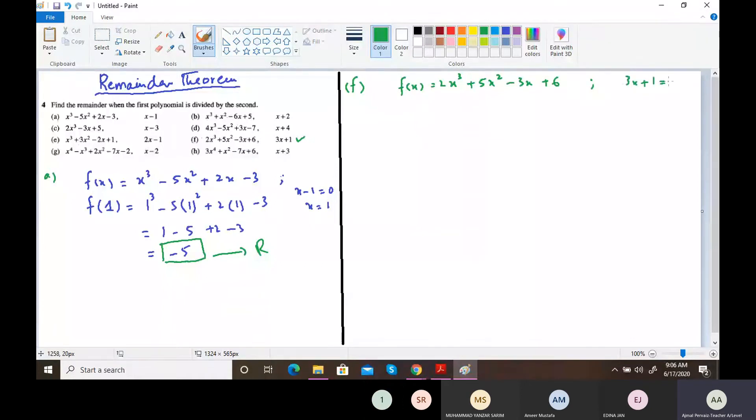From there if we get the value of x, this becomes -1/3. So let's place this value of x in this: 2 × (-1/3)³ + 5 × (-1/3)² - 3 × (-1/3) + 6.